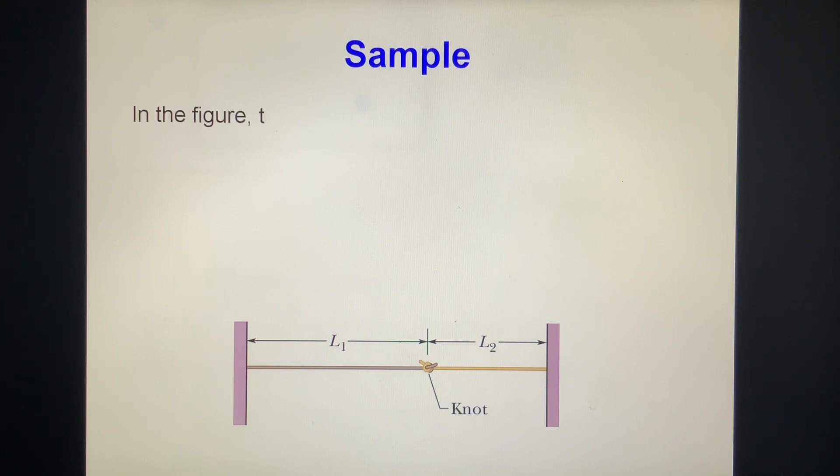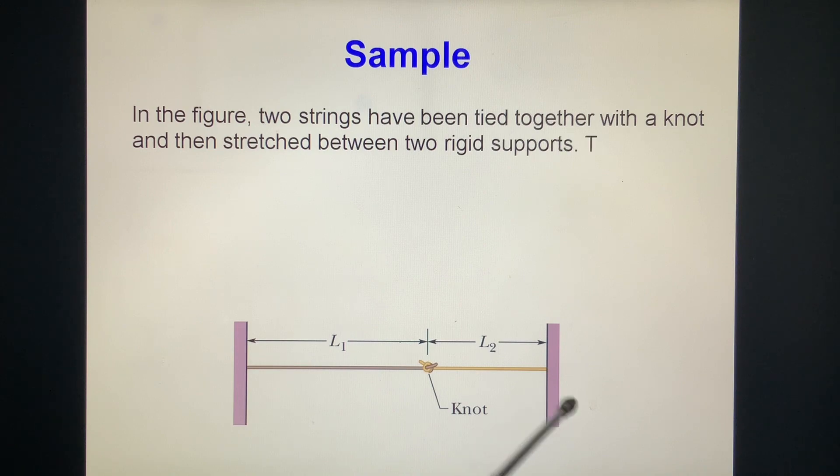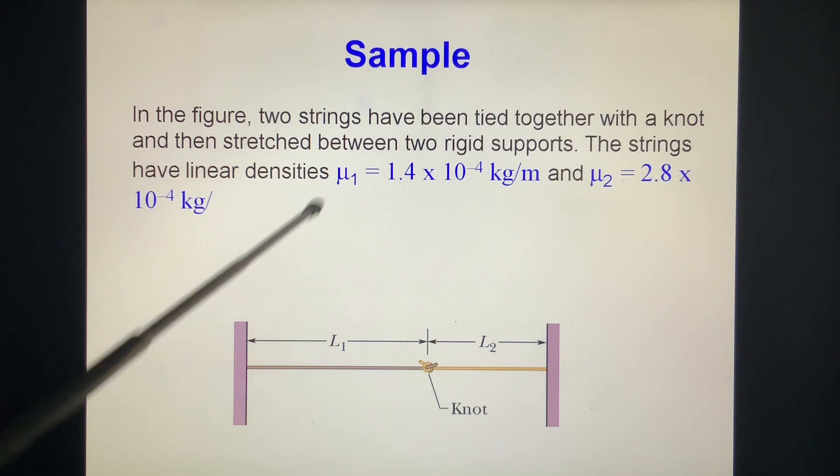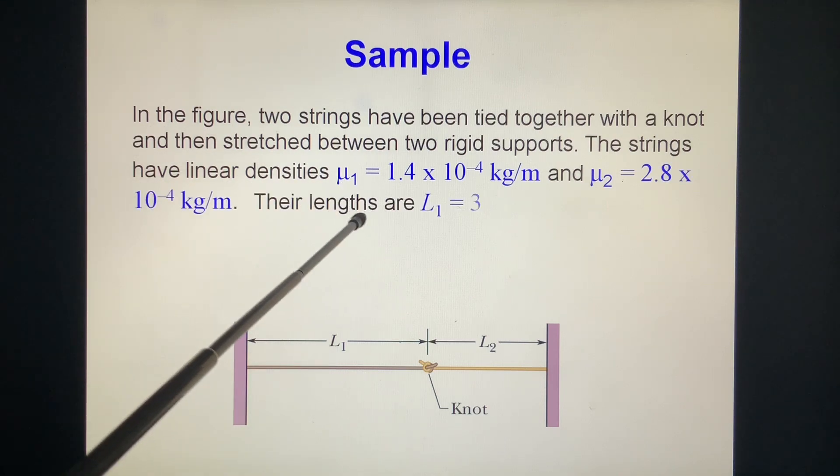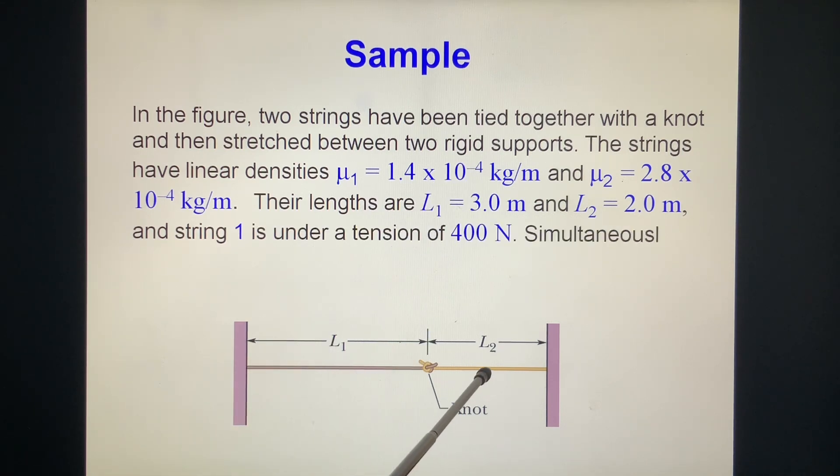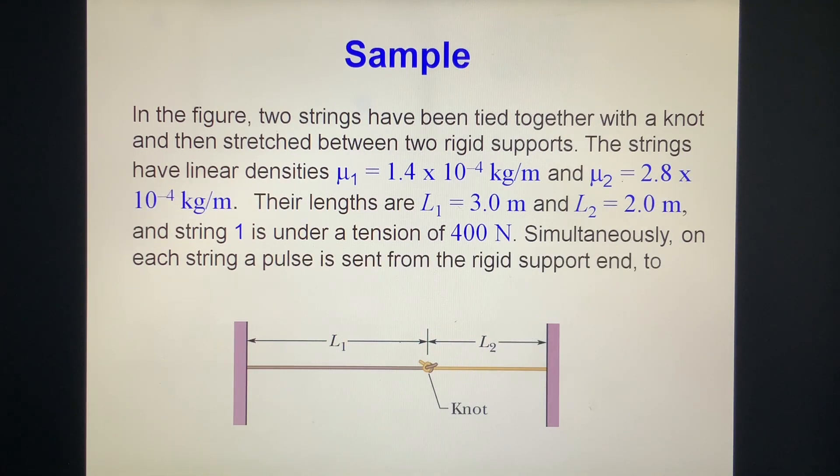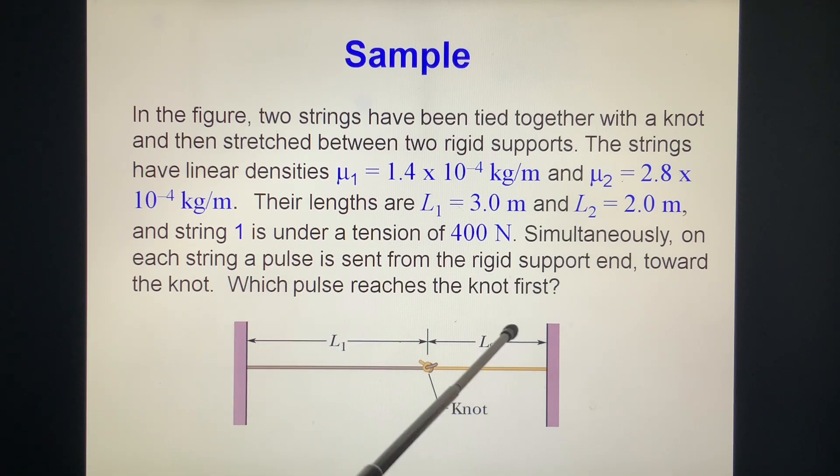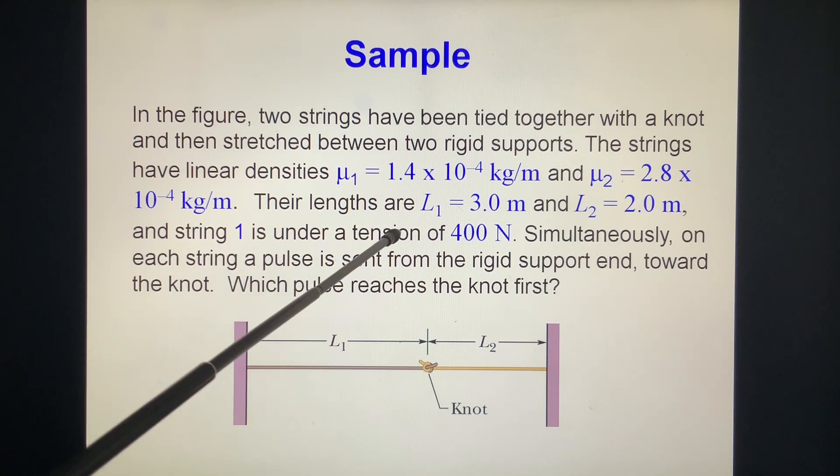Sample. In the figure, two strings have been tied together with a knot and then stretched between two rigid supports. The strings have linear density μ₁ = 1.4 × 10⁻⁴ kg/m and μ₂ = 2.4 × 10⁻⁴ kg/m. The lengths are L₁ = 3.0 m, L₂ = 2.0 m. String 1 is under tension 400 N.